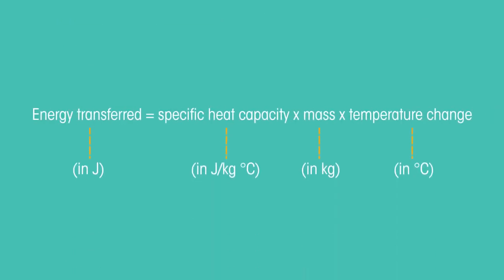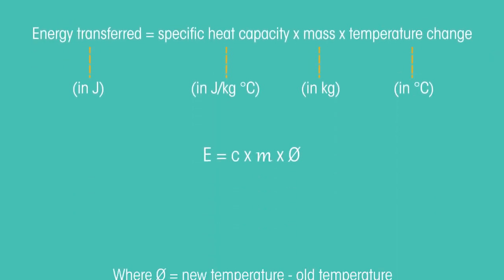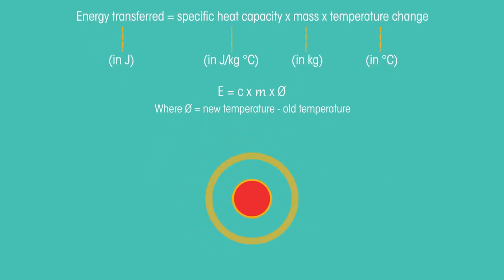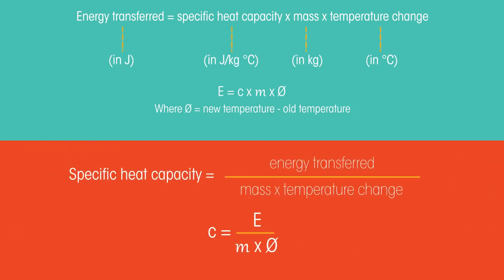We have this equation, which can be written as symbols like this. The energy transferred is the heat energy absorbed or released. This equation can also be rearranged. To work out the temperature change, subtract the old temperature from the new temperature.